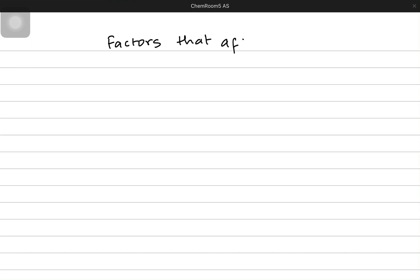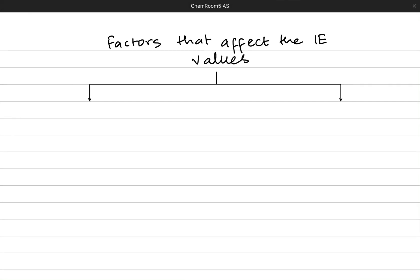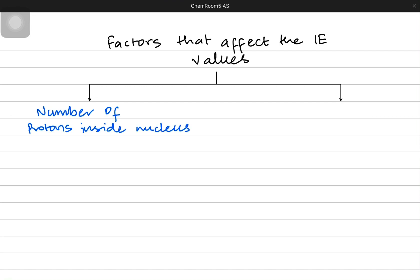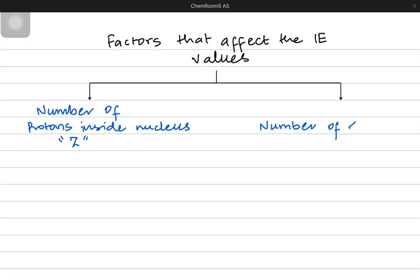Let's quickly talk about the factors that affect the values of ionization energies for various atoms. There are two key features: first is the number of protons — how many protons, or positive particles, are present inside the nucleus; the atomic number affects the ionization energy. The second is the number of shells present in the atom. If there are more shells, the outermost electron is really far from the nucleus; fewer shells means the outermost electron is really close.